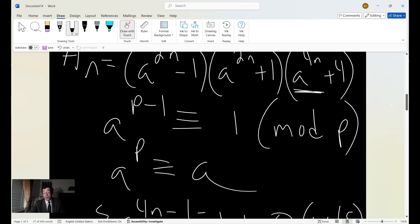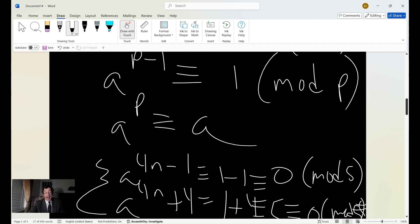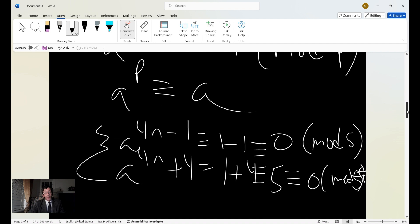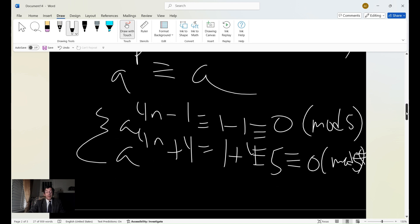So in the case that we have here, we have a^(4n) - 1 equals 1 - 1. Well, congruent with 1 - 1, congruent to 0. So that gives us modulo 5.